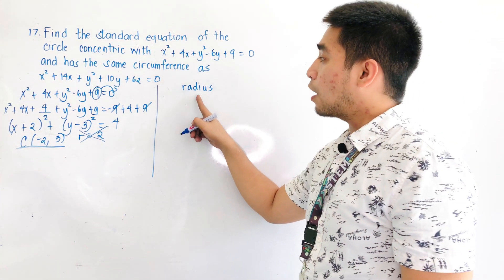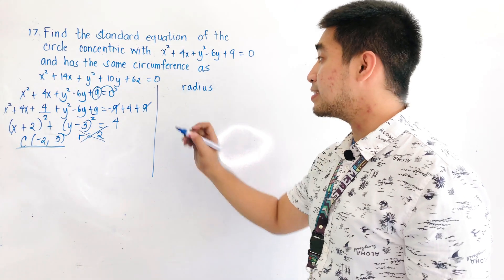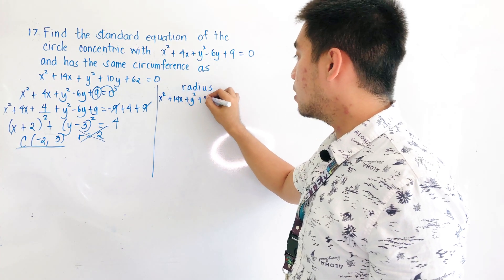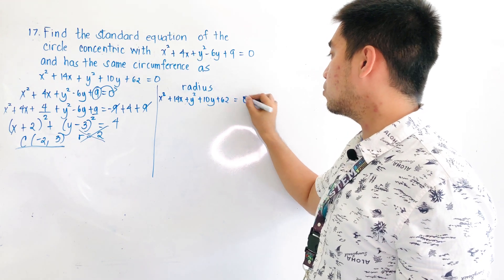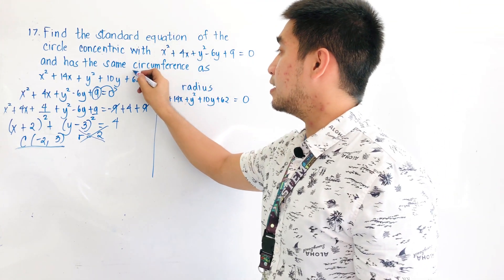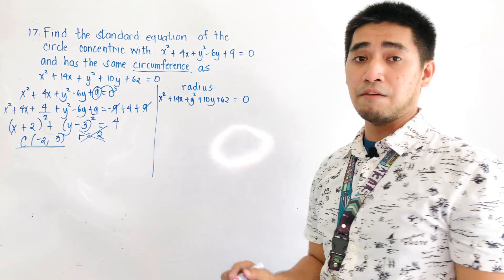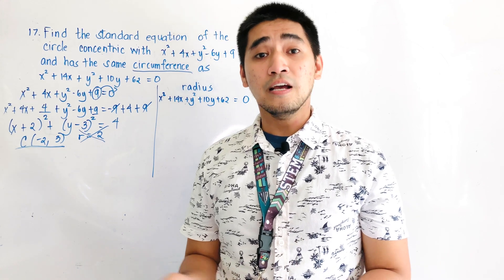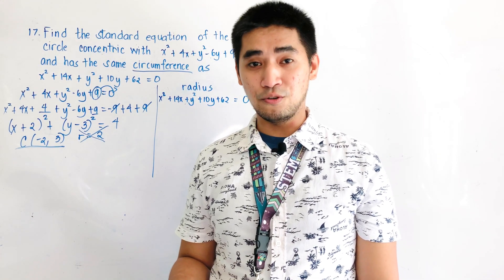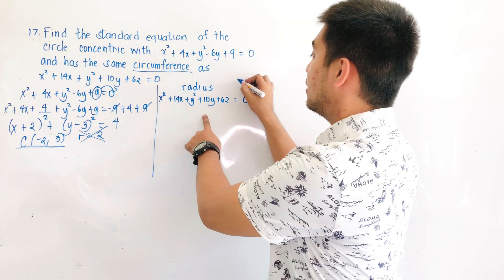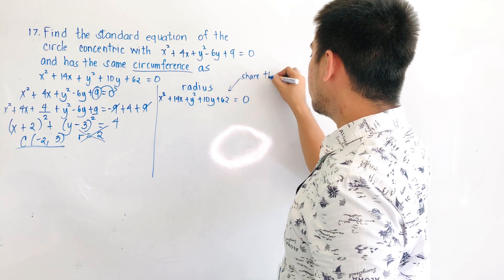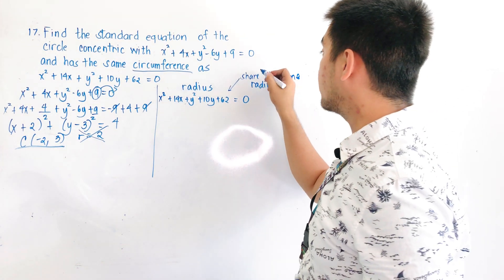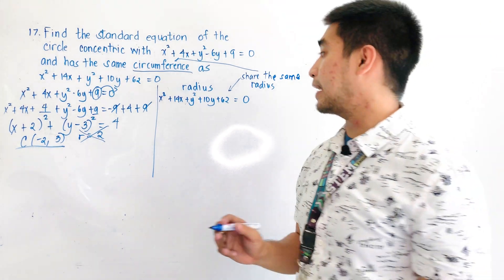We will get our radius from the second condition: has the same circumference as x² + 14x + y² + 10y + 62 = 0. In order to get the radius, remember: if the problem states they share the same circumference, therefore they share the same radius — but they do not share the same center.